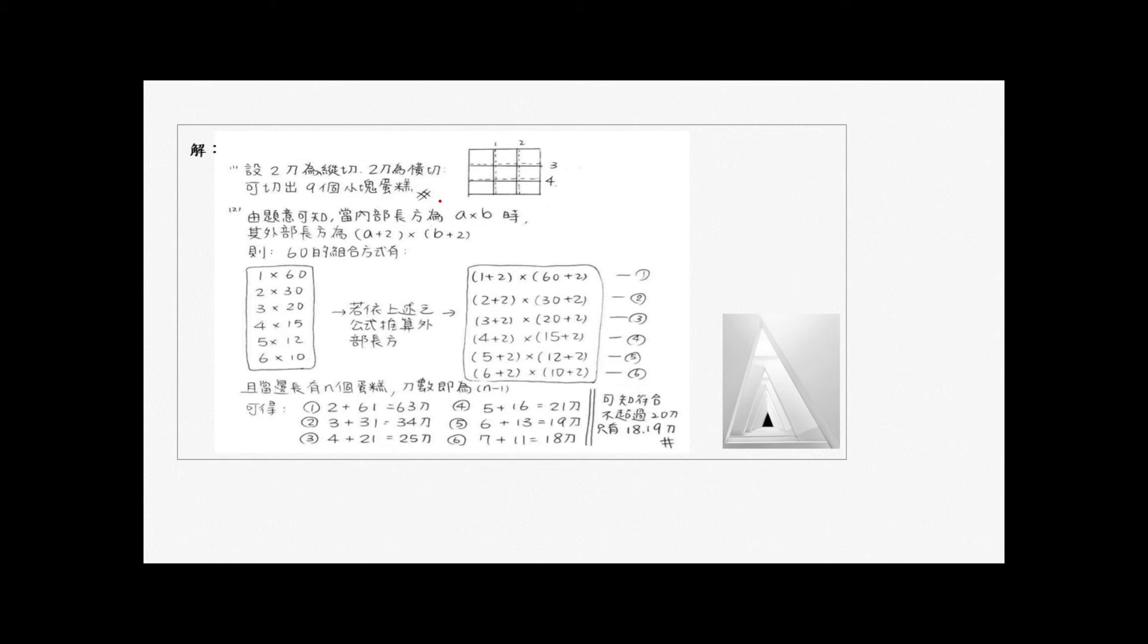接下来开始解题。第一小题:总共切四刀可以切出几块小蛋糕?那四刀有可能是二二也有可能是一三。如果二二的话就是二加一,宽也是两刀也是二加一,所以总共有九块小蛋糕。那如果是一三,如果是宽切一刀长切三刀的话,那总共可以几块蛋糕?那就是一加一乘以三加一,所以等到四二八。所以他问我们总共有几种可能,所以是九块或八块都可以。